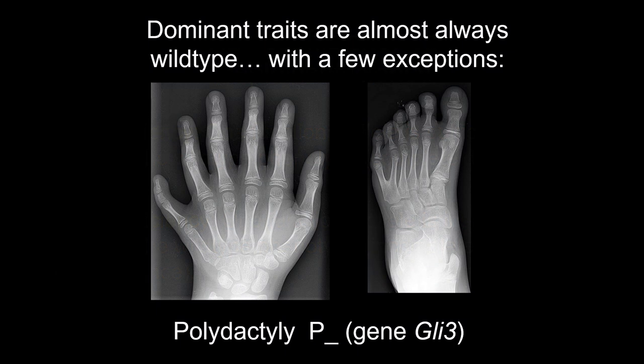Before we do that, although the dominant allele generally codes for the normal wild type trait, that isn't always the case. Polydactyly is where you have too many digits — too many fingers or toes, as you can see in the x-rays here. This gene codes for a protein that promotes growth and turns on other genes, promoting growth in the developing hand and foot, resulting in too many digits. Here we have a case where the broken gene is actually dominant, and it overrides the normal gene, which would be recessive.